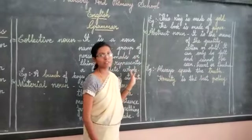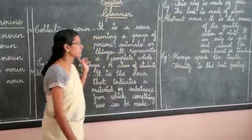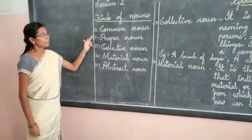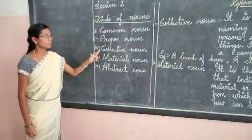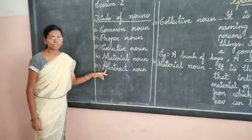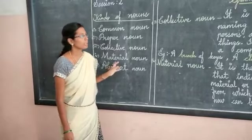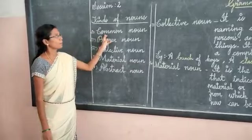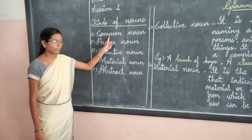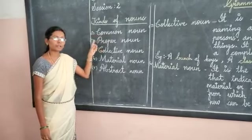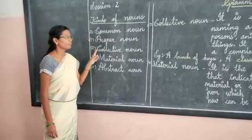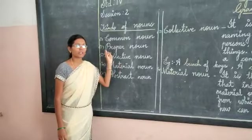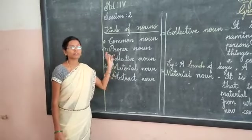Now, have you all understood the kinds of noun? There are five kinds of noun: common, proper, collective, material, and abstract noun. Tomorrow I will give you an activity — you will pick any five words for each kind of noun: five words using common noun, five using proper noun, five using collective noun, five using material noun, and five using abstract noun. Each kind of noun, you should write five words.